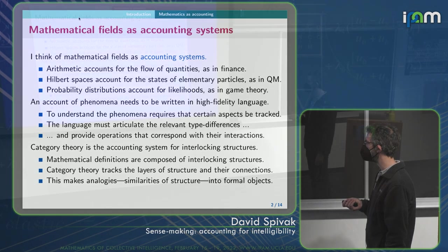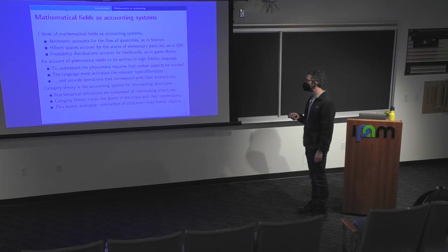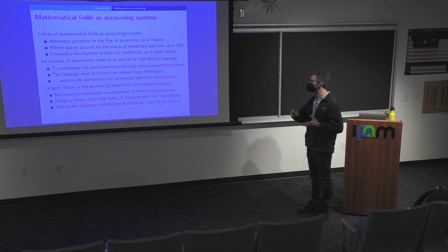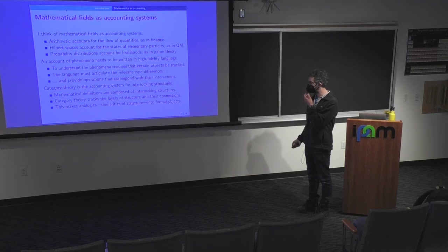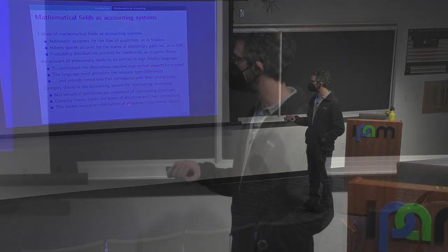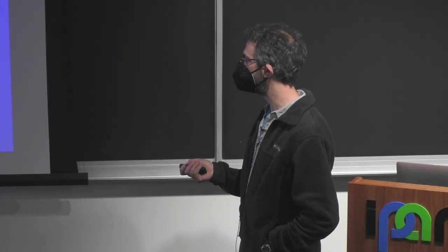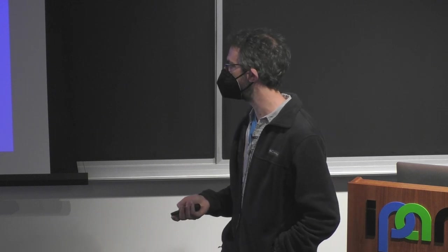So mathematical definitions, like a group or a topological space, are a bunch of interlocking structures. And category theory tracks the layers of structure and their connections. That's what it's trying to track for you so you can account for, if you want lots of different mathematical subjects to talk to each other, then this helps you kind of find those analogies, the similarities in structure. It makes those analogies formal objects that you can track with this accounting system.